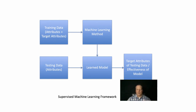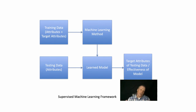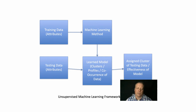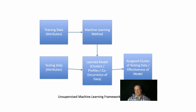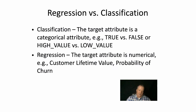In the supervised machine learning framework, you're given training data attributes plus target attributes, you run a machine learning method to create a learned model, you then pass some testing data through it, and you compare the outputs to the target attributes of the testing data — that determines the effectiveness of the model. In an unsupervised machine learning context, you have training data and what you learn is a set of clusters, profiles, or co-occurrences. You can also pass in testing data to see how well it is clustered, in order to understand the effectiveness of the model.